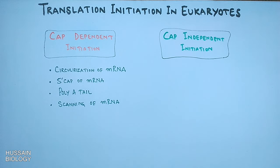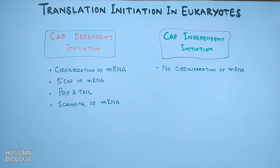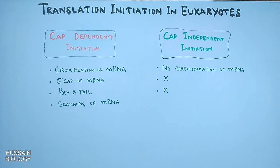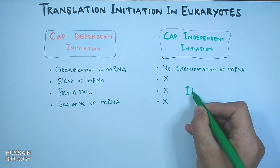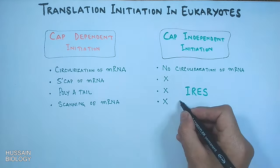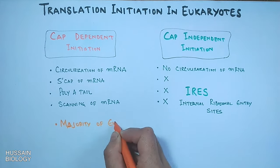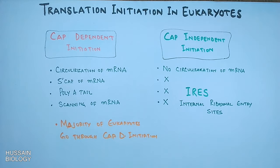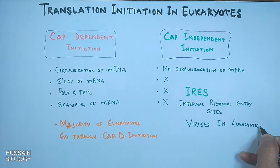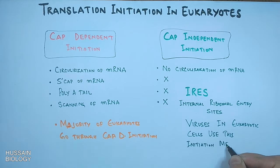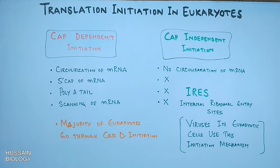In cap-independent initiation there is no circularization of mRNA, no 5' cap is involved, the poly-A tail doesn't play any role, and there is no need for scanning the mRNA molecule. This type of initiation is also termed IRES-dependent initiation — internal ribosomal entry sites. The majority of eukaryotes go through cap-dependent initiation, whereas viral mRNA in eukaryotic cells employs cap-independent initiation, since viral mRNA doesn't have a 5' cap.